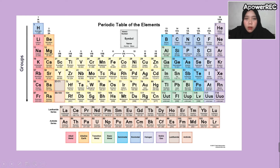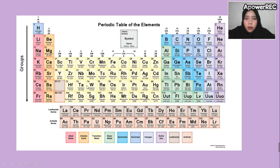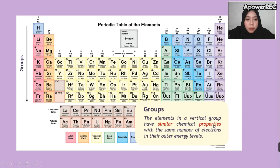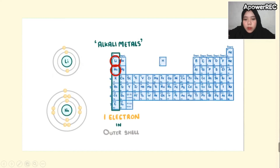What is the characteristic of groups? The elements in the vertical groups have similar chemical properties and the same number of electrons in their outer energy levels. For example in group one, these elements have one valence electron in their outermost shell. Take lithium: it has three electrons in total, but only one electron in the outermost layer.